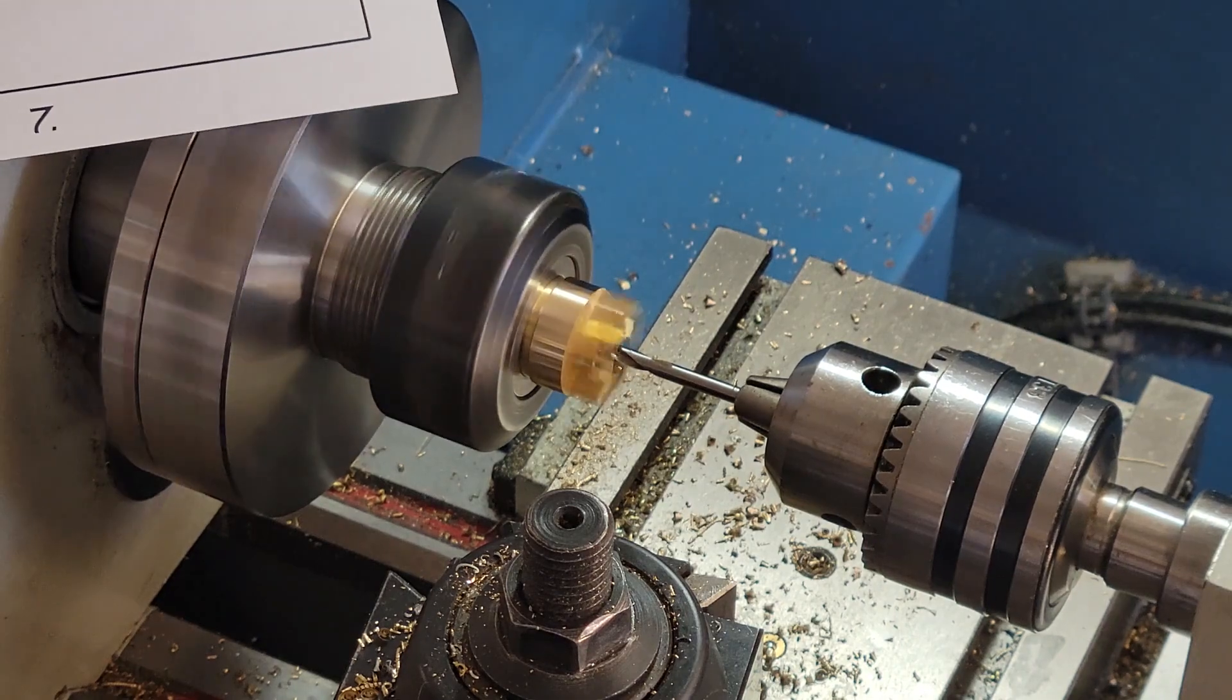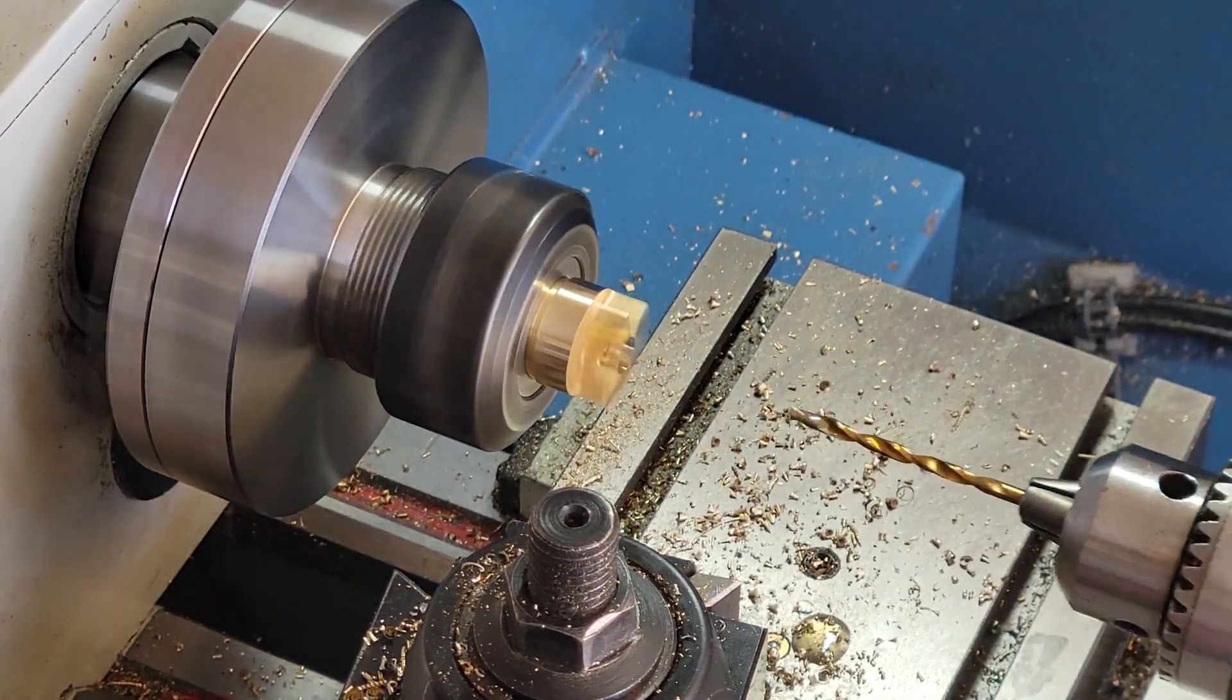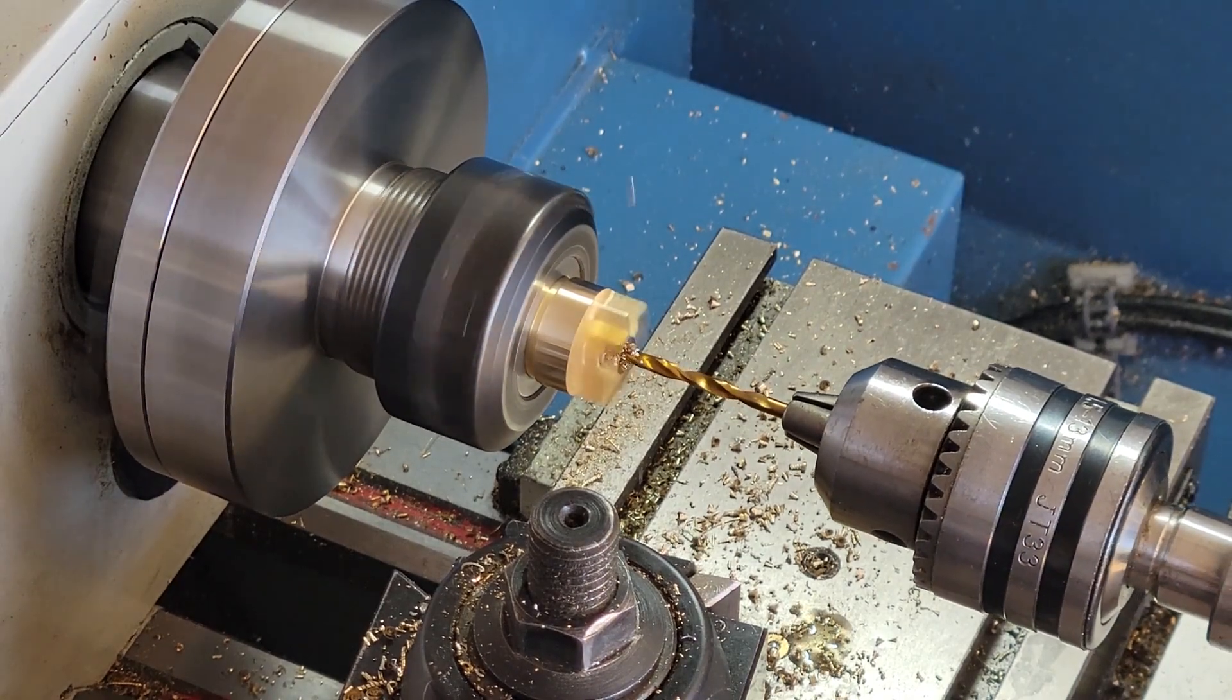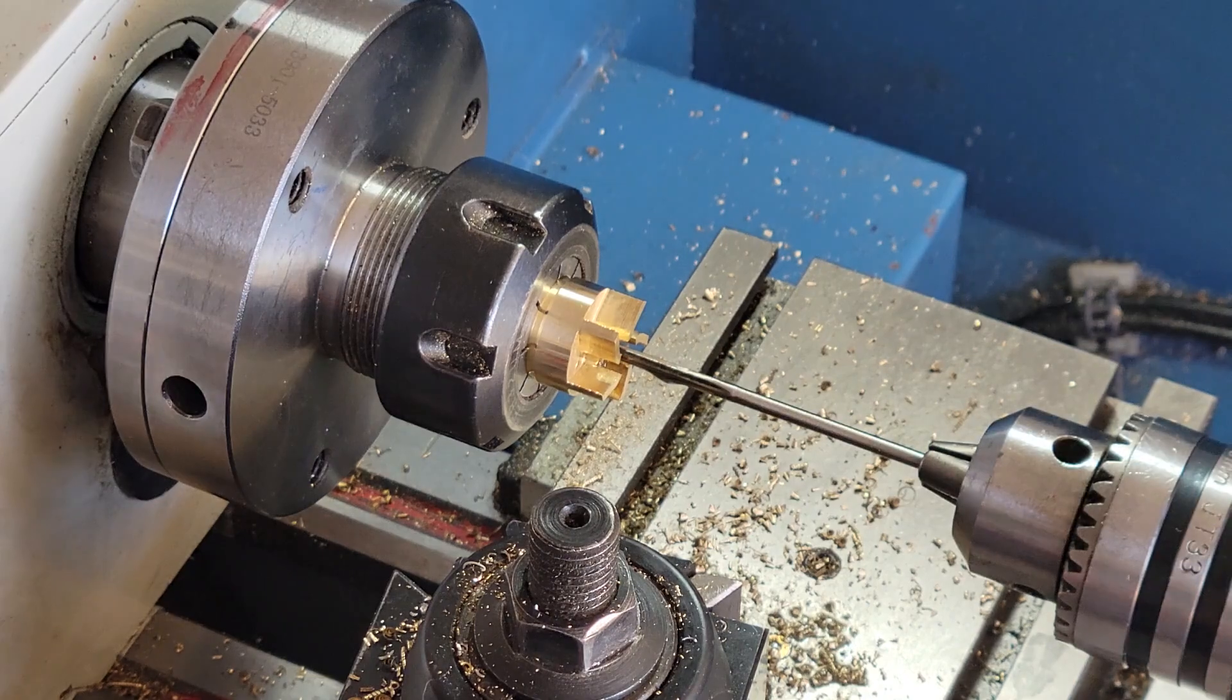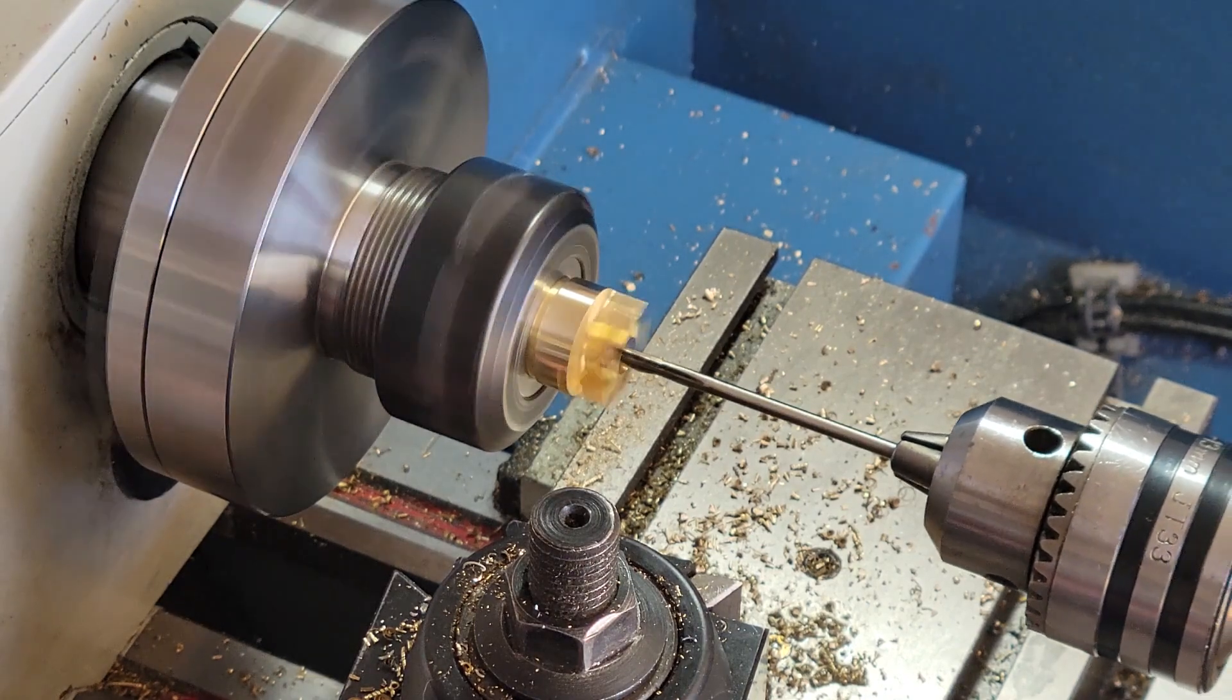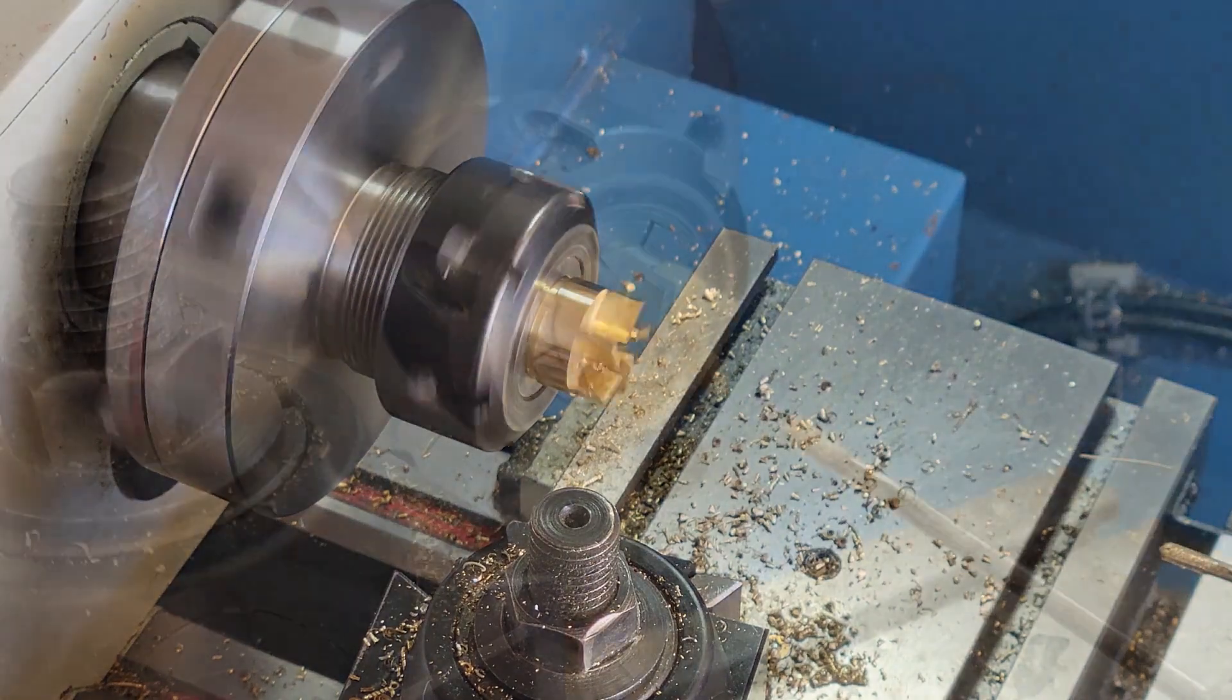Finally, we use a center drill and undersized number 31 drill and an eight inch reamer to create the hole down the middle for our impeller shaft.